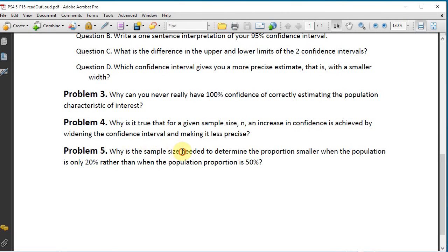And the last problem here. Problem 5. Why is the sample size needed to determine the proportion smaller when the population is only 20% rather than when the population proportion is 50%?